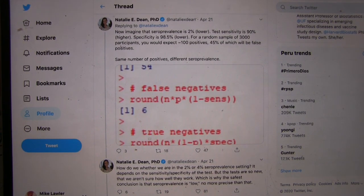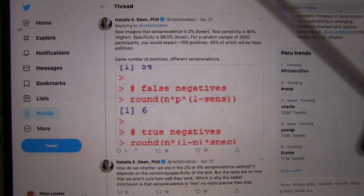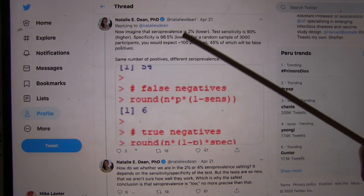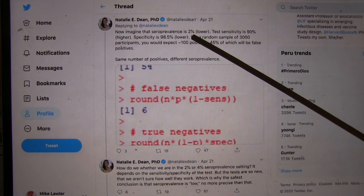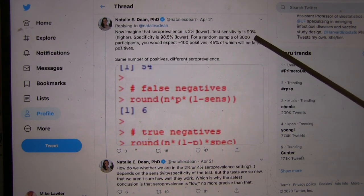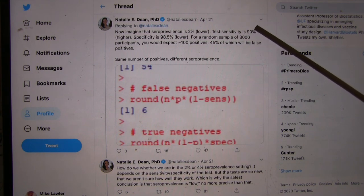Okay, so now we're going to go to her second example. Seroprevalence is 2%, so this time 2% of the people have the disease. Test sensitivity is 90%, so our positive tests are better. We're better at detecting the people who have it.